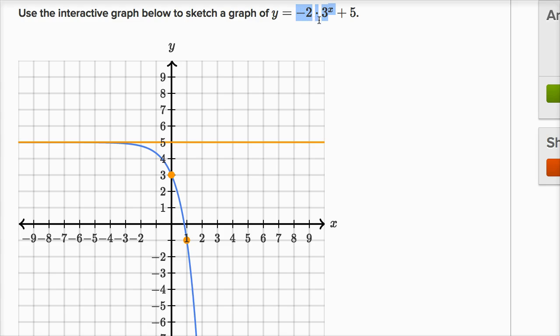But then as x becomes more and more positive, this term becomes really negative because we're multiplying it times negative two, and we see that it becomes really negative. So I feel pretty good about what we've just graphed. We've graphed the horizontal asymptote, it makes sense, and we've picked two points that sit on the graph of this exponential. So I can check my answer, and we got it right.